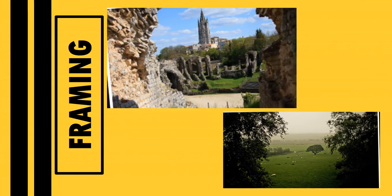The next element is framing. Framing is defined as the technique used by photographers to direct the viewer's attention to the main subject — to create a frame within a picture. For example, in the first image, the brick walls serve as a frame to focus on the castle. In the next image, the trees serve as the frame to focus on the field.